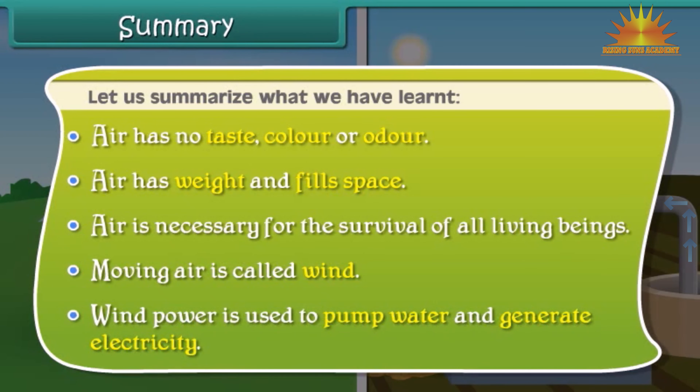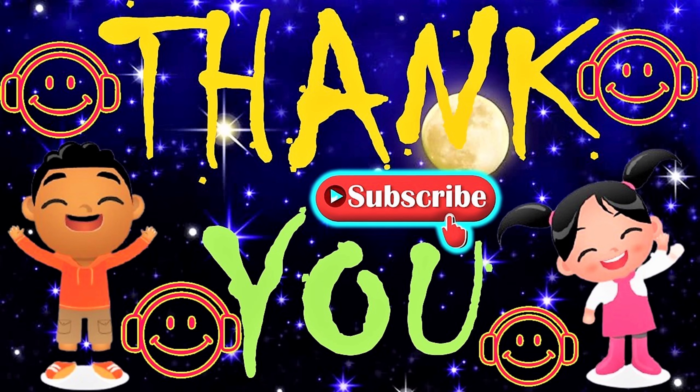Moving air is known as wind. Wind moves clouds and causes rains. Wind helps sailboats and gliders to move. The power of wind is used to generate electricity. Wind power also helps pump water.